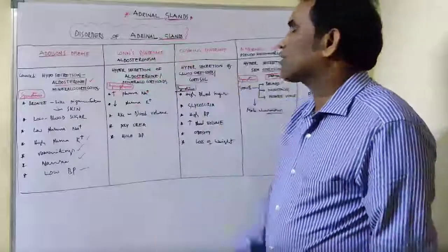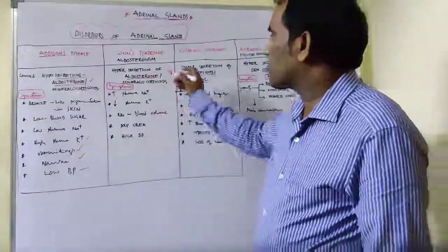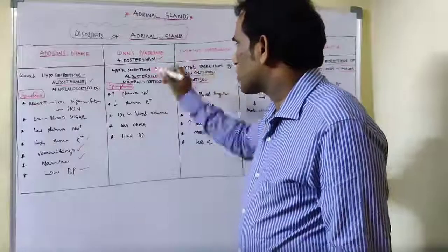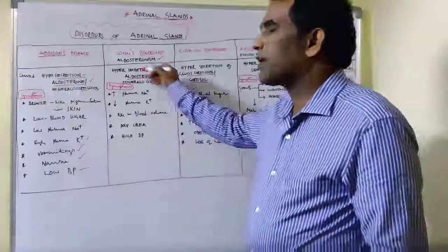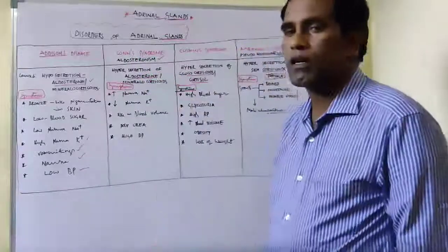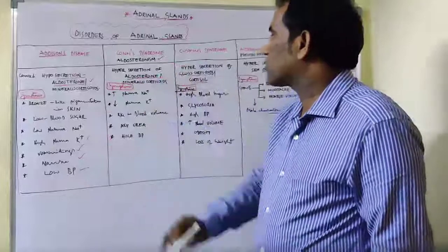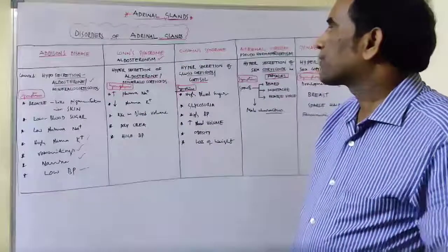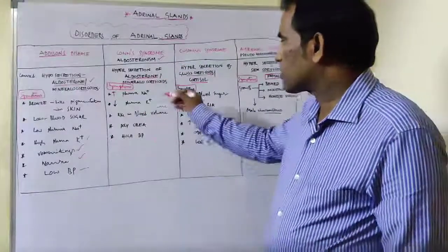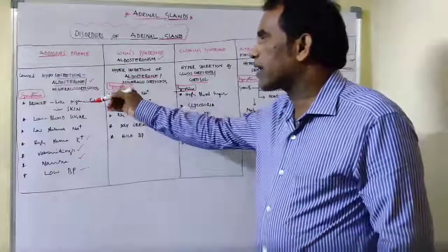Now Conn's syndrome, also known as Aldosteronism, is caused by hypersecretion of Aldosterone, excessive secretion of Aldosterone, which leads to Conn's syndrome.